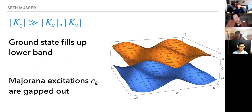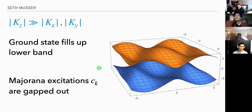Now we look at excitations. I promised interesting spin liquid physics — fractional excitations and maybe even anyons. We'll start in the K_z much greater than K_x, K_y phase. We get some band structure and we fill up the lower band, gapping out the Majoranas.